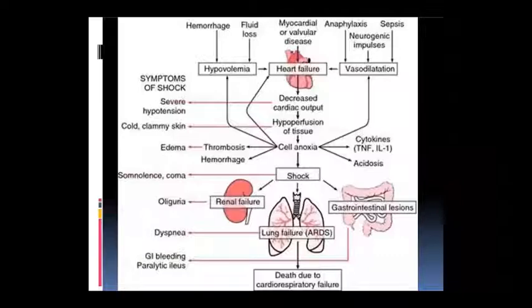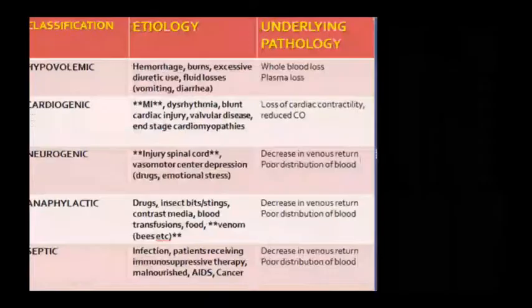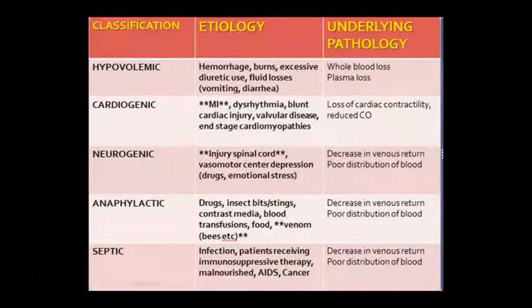GI lesions ki wajah se GI bleeding aur paralytic ileus ho sakta hai. Aur yeh sab cheezein mil karke death cause kar deti hain kyunki cardio-respiratory failure bhi person mein ho jata hai. To yeh puri mechanism hai, puri pathophysiology hai shock ki with their signs and symptoms. Yahan par left side mein aapko signs symptoms dikhai de rahe hain aur yeh puri pathophysiology dikhaayi de rahi hai.